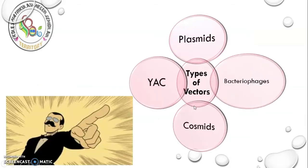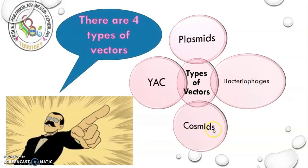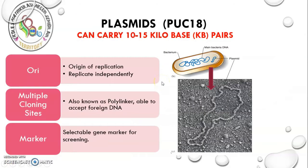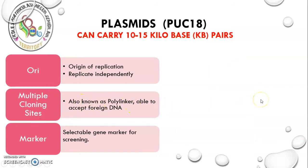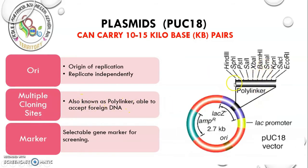There are four types of vector: plasmid, bacteriophage, cosmid, and YAC. The plasmid — for example pUC18 — can carry around 10 to 15 kilobases. It has an origin of replication, which enables it to replicate independently. It also has a multiple cloning site, also known as a polylinker, which enables it to accept foreign DNA by cutting there and inserting the DNA of interest. It also has a genetic marker — a selectable gene useful for screening.